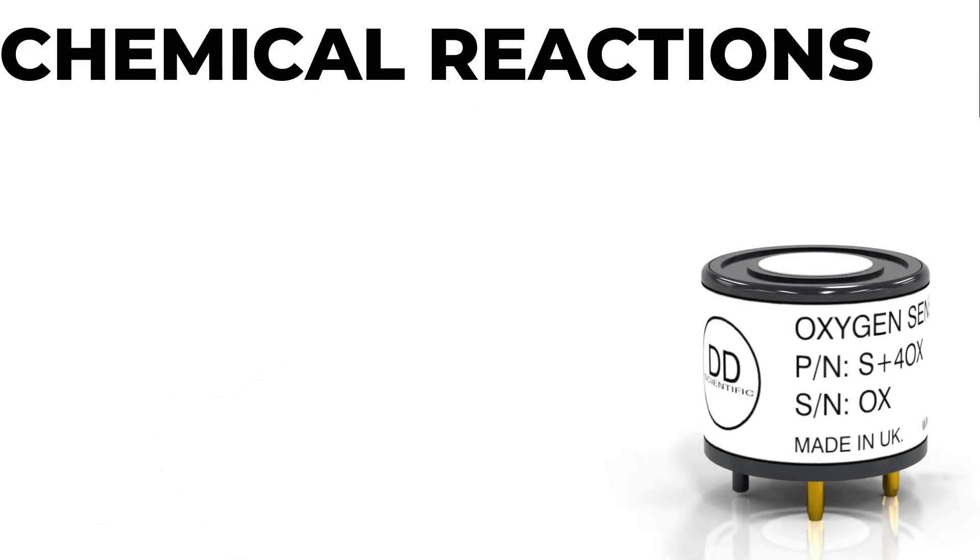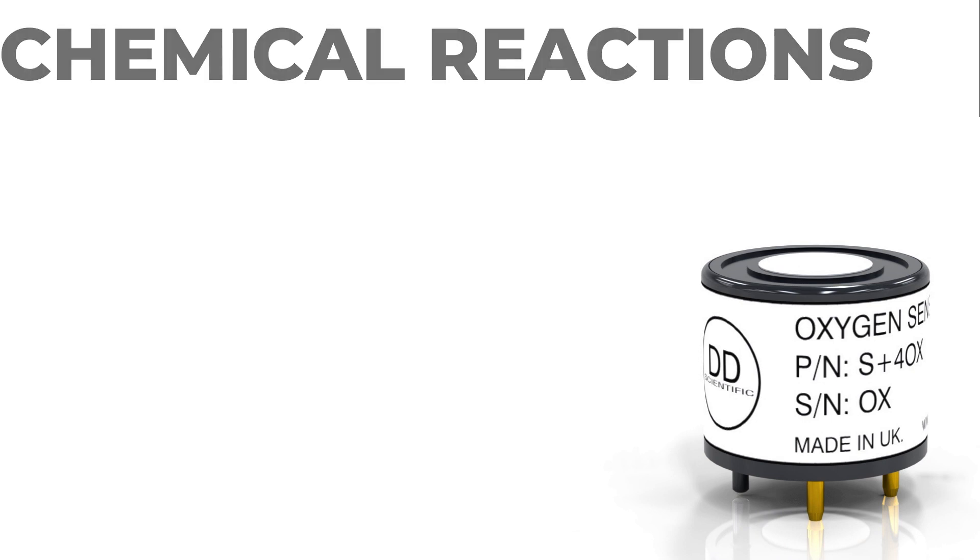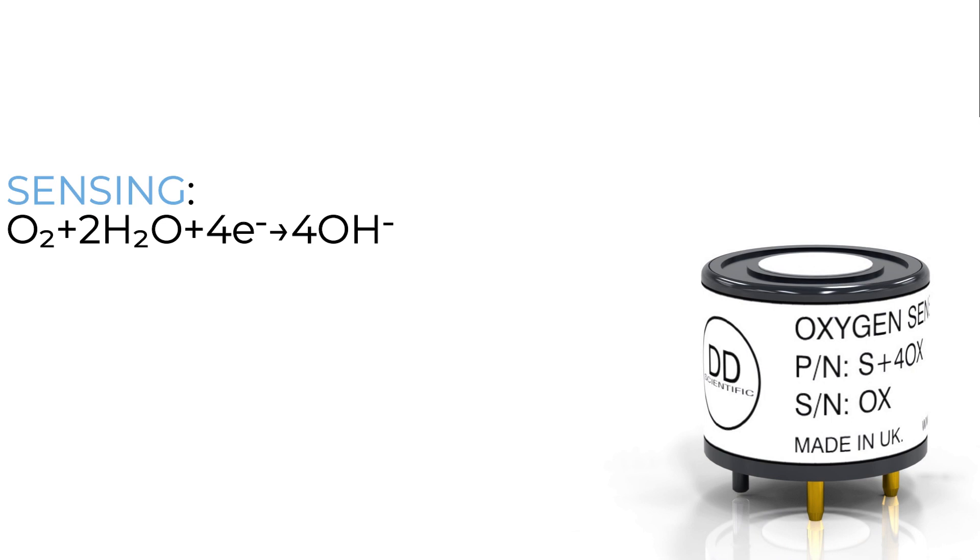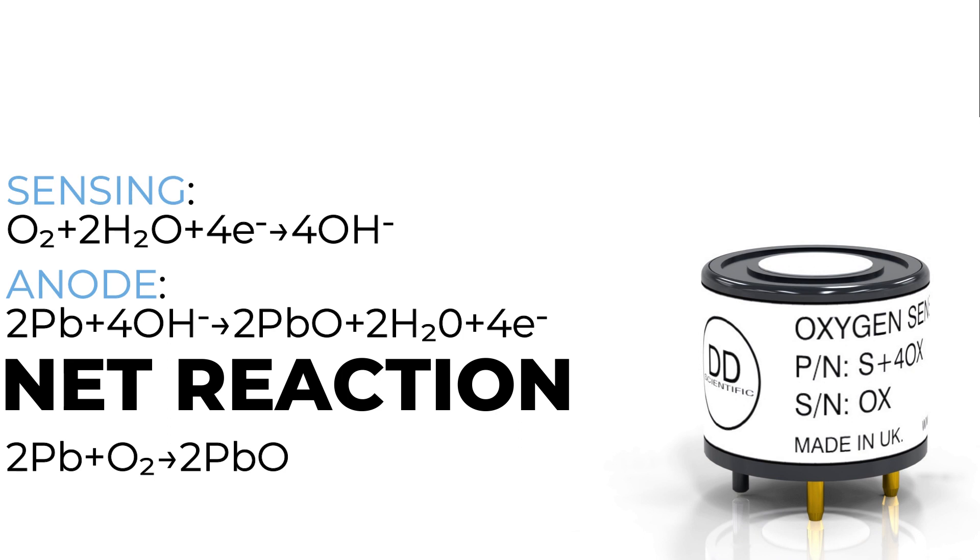Thus, inside the sensor, two chemical reactions are happening simultaneously. At the sensing electrode, oxygen is being reduced in the presence of electrons and water to produce hydroxyl ions. At the anode, lead is being oxidized to lead oxide, forming water and electrons. Since all of the water and electrons produced at the anode are consumed at the sensing electrode, the net or overall reaction is oxidation of lead to lead oxide by oxygen molecules.